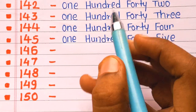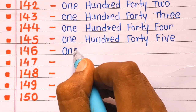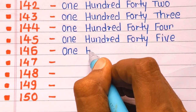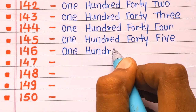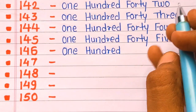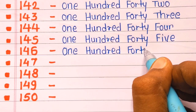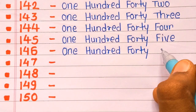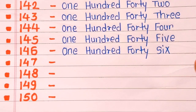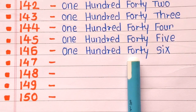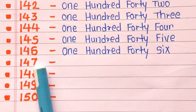Next is 146. 146 is one hundred forty six. O-N-E, one. H-U-N-D-R-E-D, hundred. F-O-R-T-Y, forty. S-I-X, six. 146.